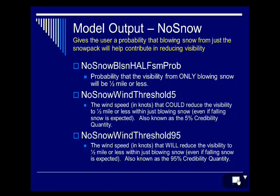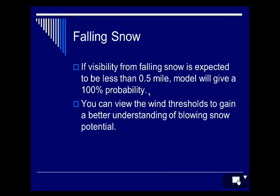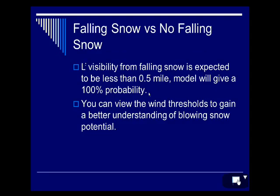There are also no-snow wind thresholds and probabilities. If you have falling snow in the forecast, this output removes the visibility reduction from that falling snow and only gives probabilities possible from blowing snow. If you're getting 100% probabilities from the snow-plus-blowing-snow output but 0% from this, you can assume all visibility reductions are from falling snow and there won't be additional blowing snow problems after it ends. Viewing all wind thresholds together, not just the probability, will give a better understanding of your blowing snow potential.